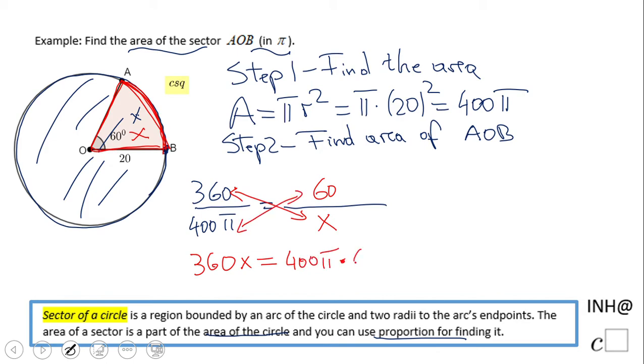Divide by 360 to get an expression for x, which is the area of the sector, and we end up with x equals 400π times 60 over 360.